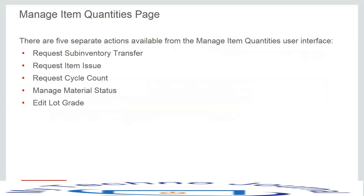There are five separate actions available from the manage item quantities user interface: request sub-inventory transfer, which allows transferring material from a source sub-inventory to a destination sub-inventory; request an item issue, which transfers material to a destination account; request a cycle count by entering the count name and scheduled date; manage material status at sub-inventory, locator, and lot levels; and edit lot grade for a selected lot.